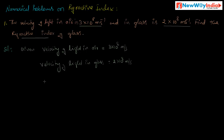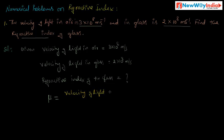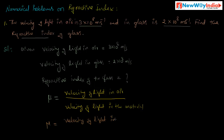We have to find the refractive index of the glass. The formula for refractive index is: mu is equal to velocity of light in air or vacuum divided by velocity of light in the material. Here the material is glass, so mu equals velocity of light in air divided by velocity of light in glass.